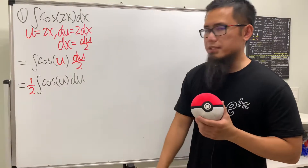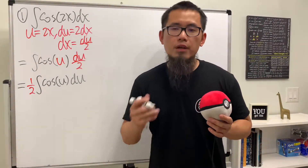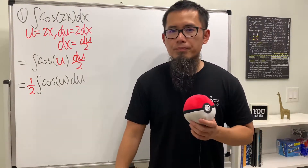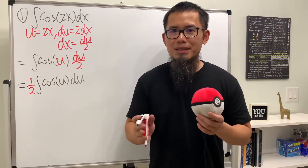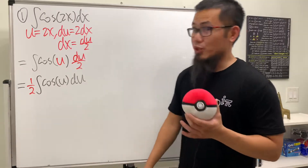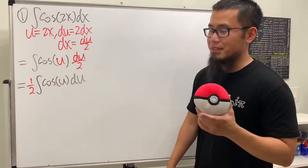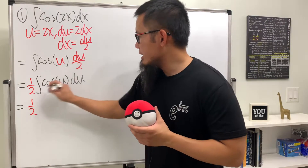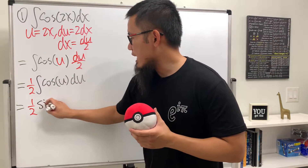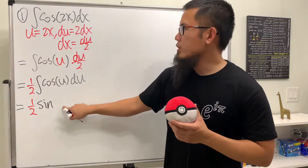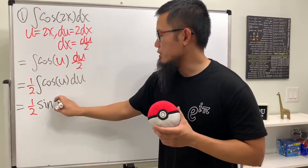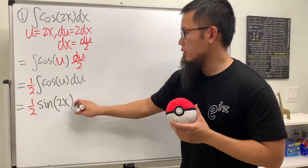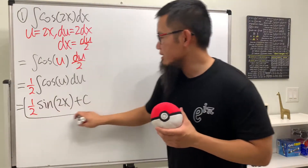Because we have 1 over 2, it's just a constant multiple, so we put that on the outside of the integral: 1 half. Now focus on the integral of cosine u du. The derivative of what function gives us positive cosine u? The answer is positive sine u. So we have 1 half times sine u, and since u equals 2x, we substitute back to get (1/2)sin(2x) plus C, and we are done.